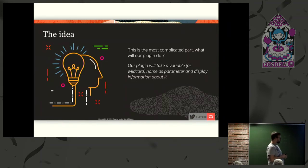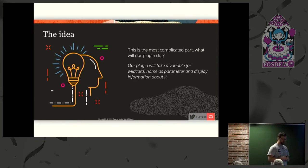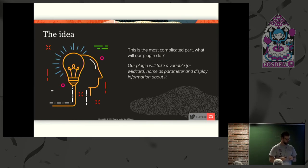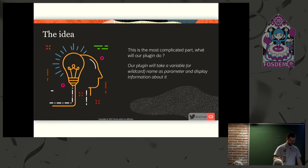So the idea — this is the most complicated part. I was thinking what could I show that won't take ages to code for the event. Our plugin will take a variable as an argument and display all the information about it. As you know, we keep information about variables that can be found in the performance schema. So we're going to play with that. This is the idea for today.